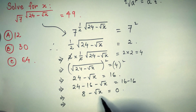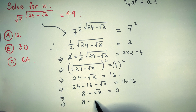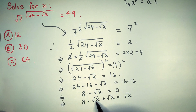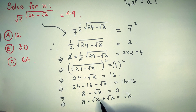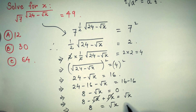Here, adding root over x to both sides, we get: 8 minus root over x plus root over x is equal to root over x. The minus root over x and plus root over x cancel each other, so we get 8 is equal to root over x.